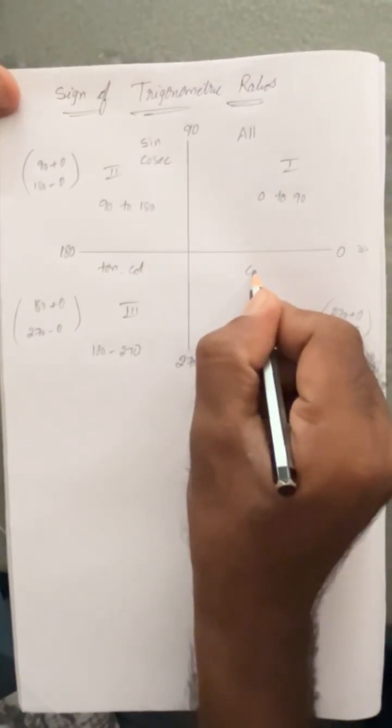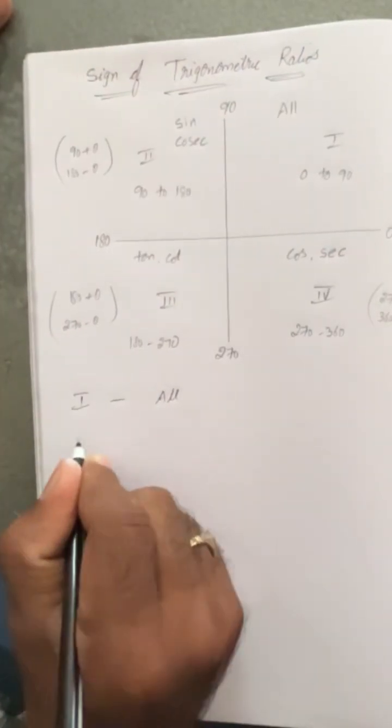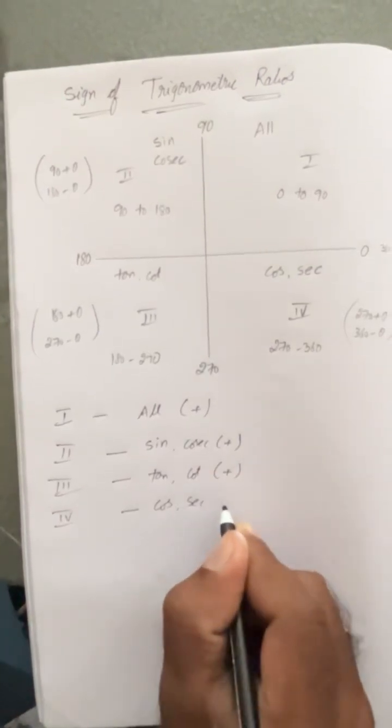In first quadrant all are positive, second quadrant sine and cosecant, third quadrant tan and cot, fourth quadrant cos and secant.